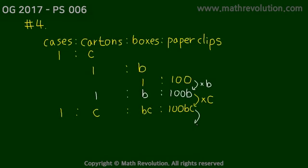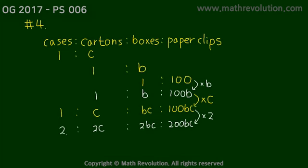Since we're looking at two cases, we multiply 100bc by 2 to get 200bc. So in 2 cases there are 2bc boxes, 2c cartons, and 200bc paper clips. The correct answer is choice C.